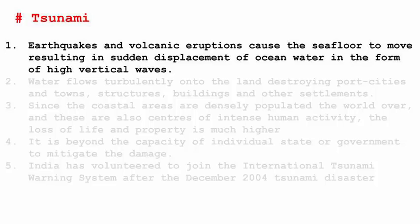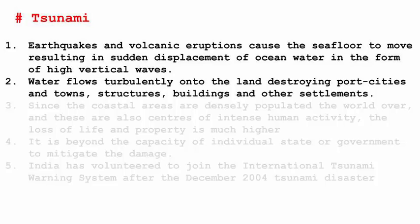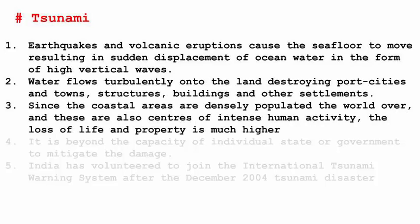Whenever the ocean bed stretches and deep cracks form, volcanic eruptions bring molten magma out. As a result, huge pressure is created on the surface, causing earthquakes and other displacements which push ocean water upward. Because of that, high waves are generated. These waves move toward the landmass at very high speed, causing tsunamis that destroy port cities, towns, structures, buildings, and other settlements.